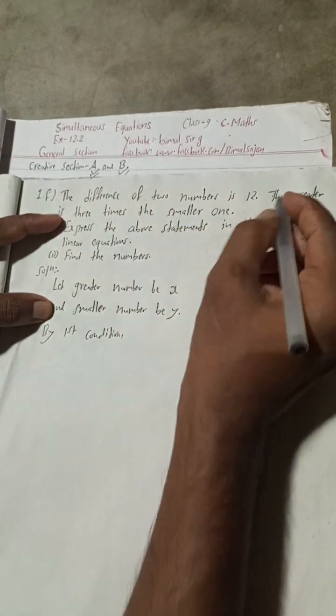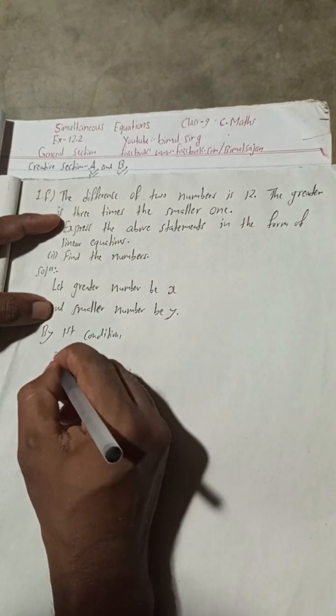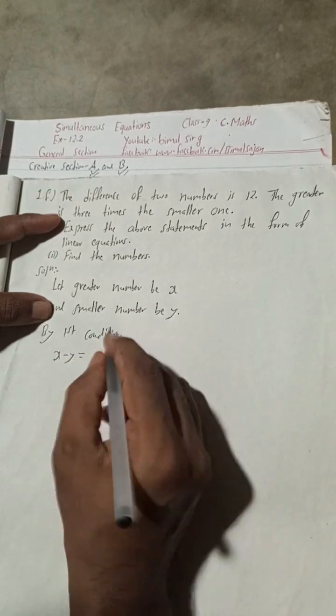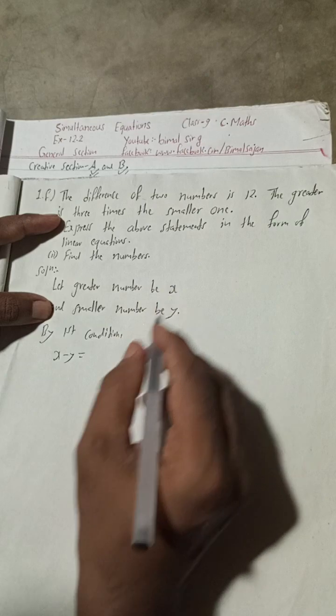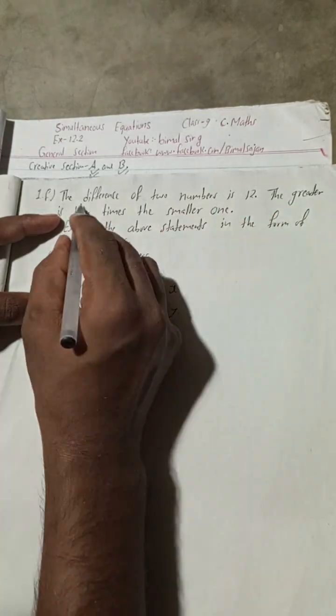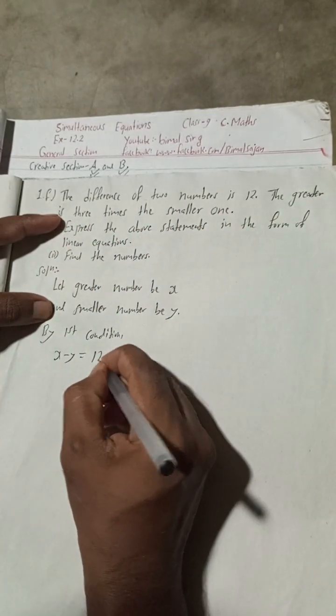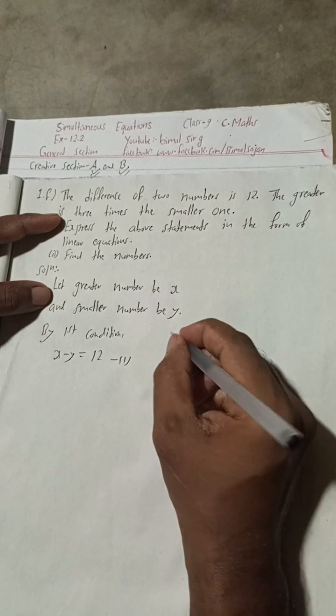The difference of two numbers, that means the greater number minus the smaller number. Difference means minus, so this minus this is equal to 12. This is our equation 1.